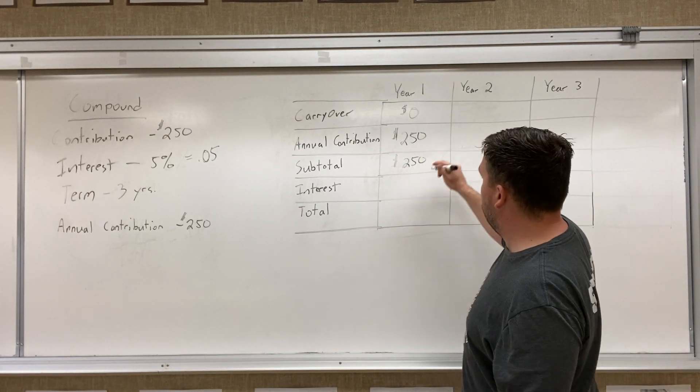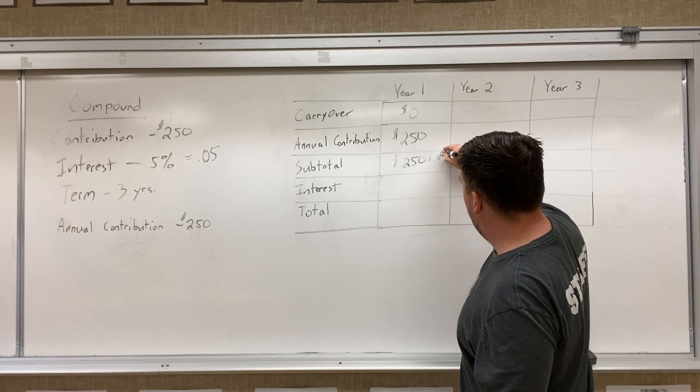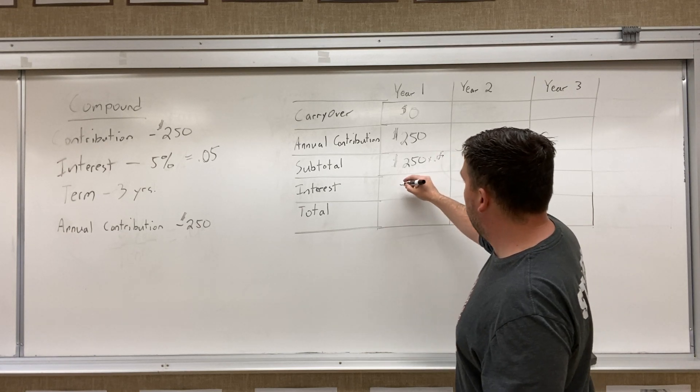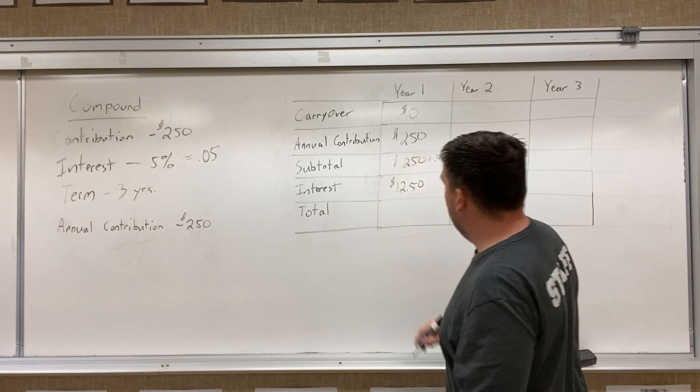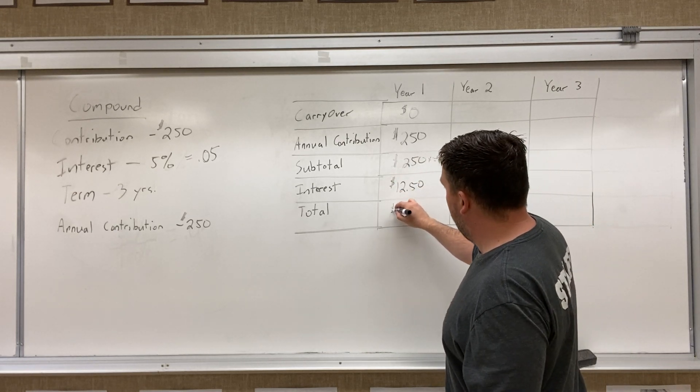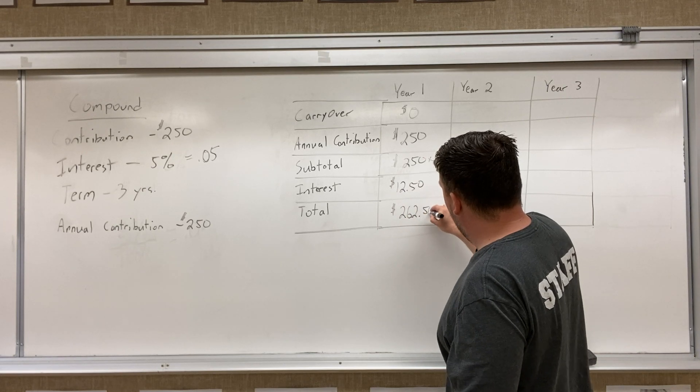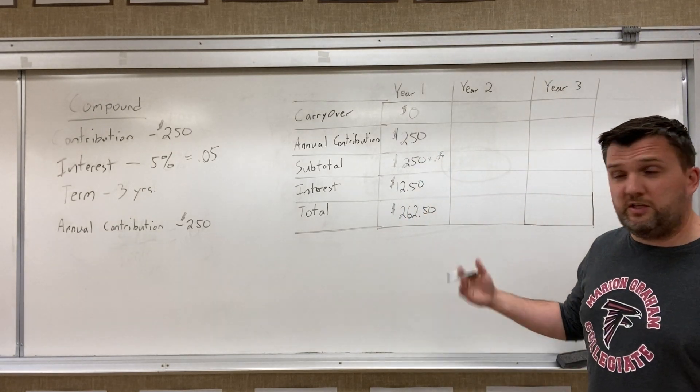We're gonna earn interest off of it, just like we showed in the other one. So when we times that, remember we're doing that by 0.05. So when we times that out, we would still get $12.50. For a total at the end of the year of $262.50. So it starts out the same way.